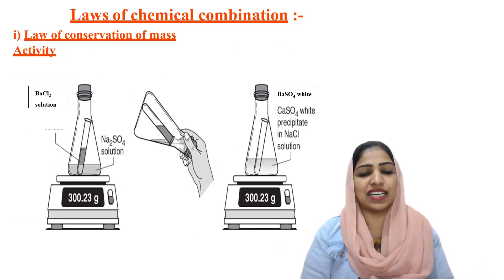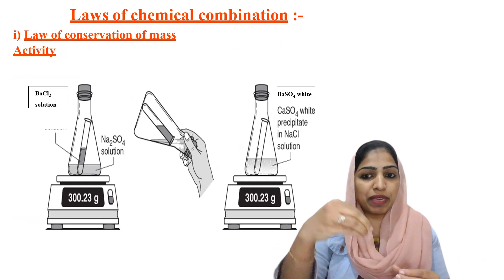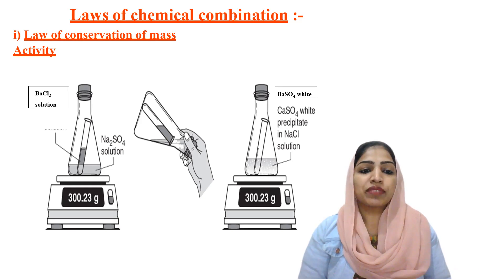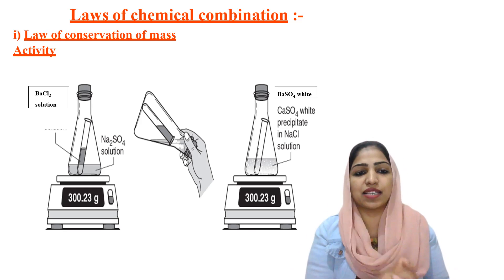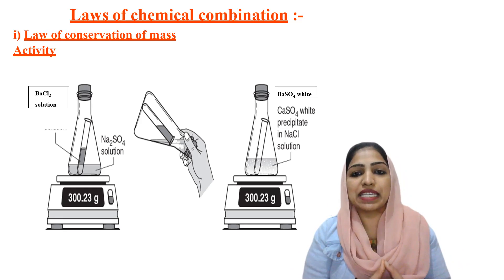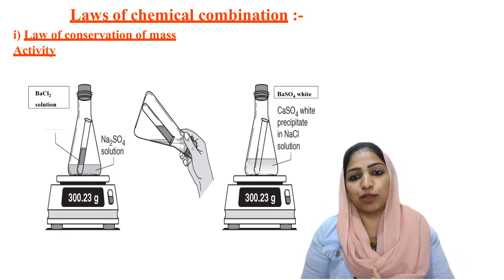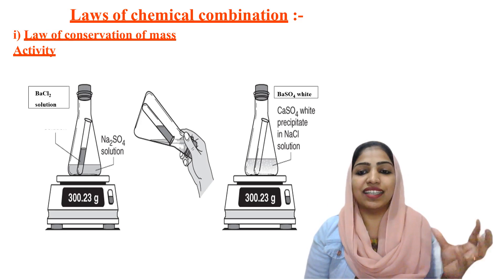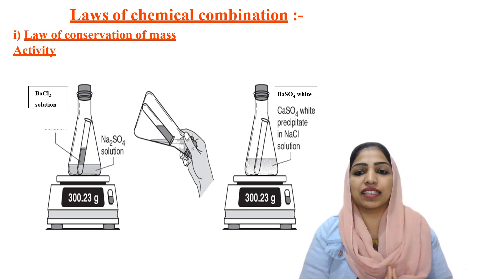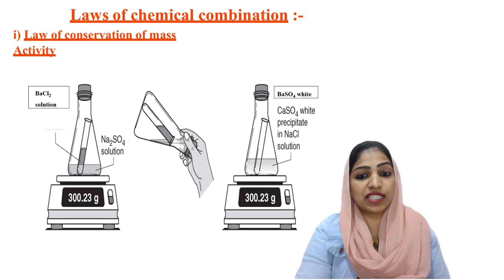In our textbook, we have an activity using sodium sulfate in a conical flask and barium chloride in a test tube. When we mix these reactants, the mass of the reactants equals the mass of the products. This verifies the law of conservation of mass.